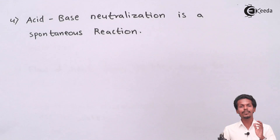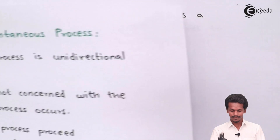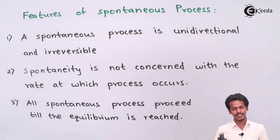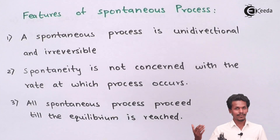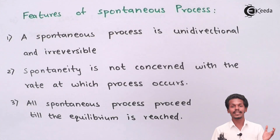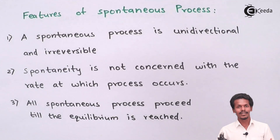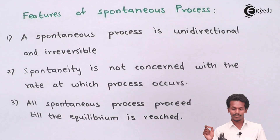In this chapter, we are mostly talking about spontaneous processes and spontaneity. There are a few features to keep in mind. The first feature is: a spontaneous process is unidirectional and irreversible. As in the water example, water flows from a higher level to a lower level — it cannot return from lower to higher level on its own. We must apply external influence to reverse it.